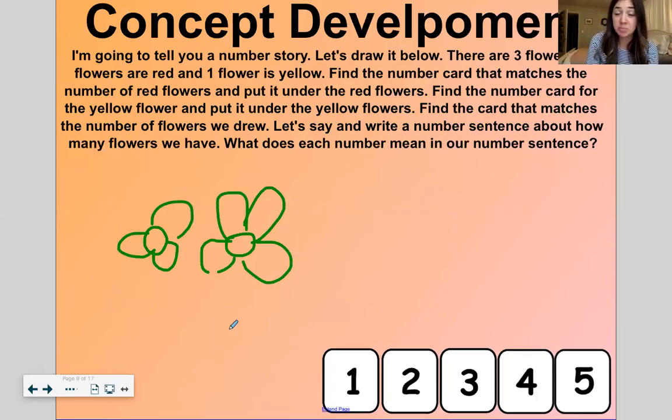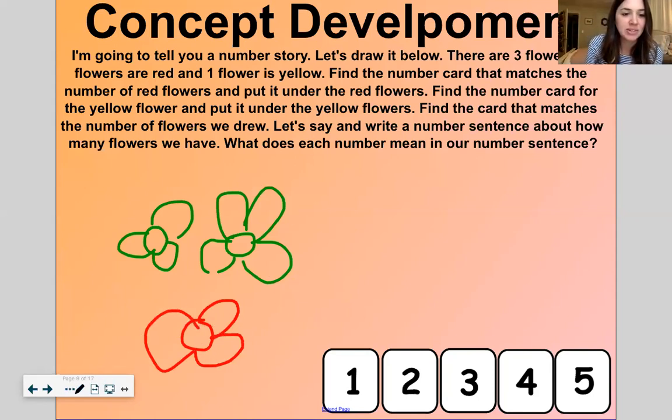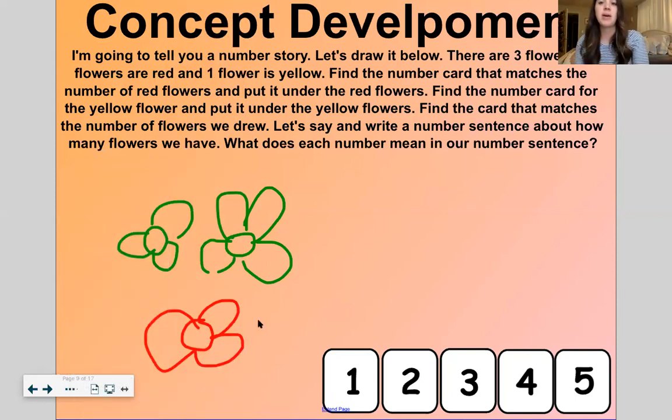Okay. So actually, I'm going to erase that one. And I'm going to make another flower a different color here. Okay. So now I have three flowers. Now I'm going to make sure I get my select button back. Okay. So there are three total flowers. Two flowers are green. And one flower is red.